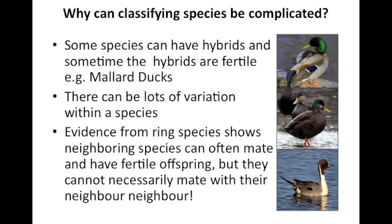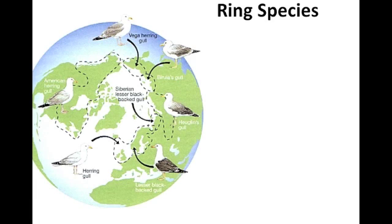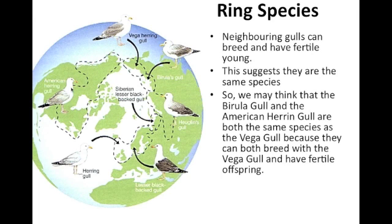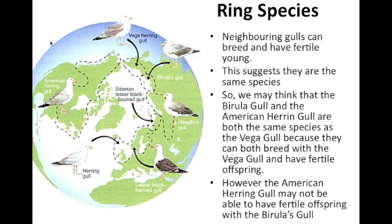There's also evidence from ring species, which shows that neighbouring species can often mate with each other. However, the further away they move from their neighbour, the less likely they are able to mate. An example of a ring species is gulls. On the diagram, we can see gulls living in different geographical areas. Neighbouring gulls can generally mate and have fertile offspring, suggesting they're the same species. However, it's less likely that the American herring gull will be able to mate successfully with the Bergmann's gull — these two are more likely to not be able to have offspring, or to form only a hybrid.